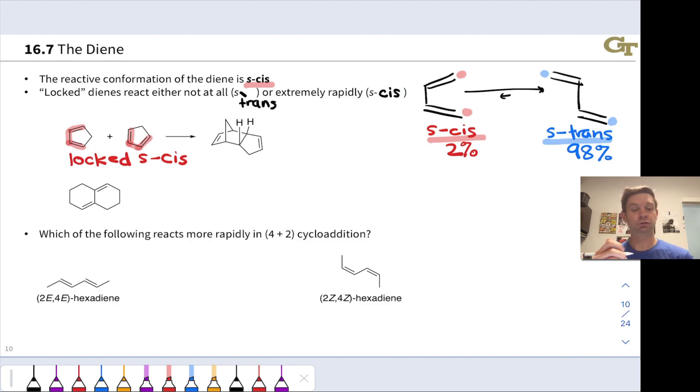There are other dienes that are locked in an S-trans arrangement, and a good example of this is this structure right here. Notice that these two double bonds are absolutely locked in an S-trans arrangement. There's no way to rotate this around. There's really no rotation around that central single bond because the inner carbon is tethered to each of the ends like this. So this is locked in an S-trans orientation.